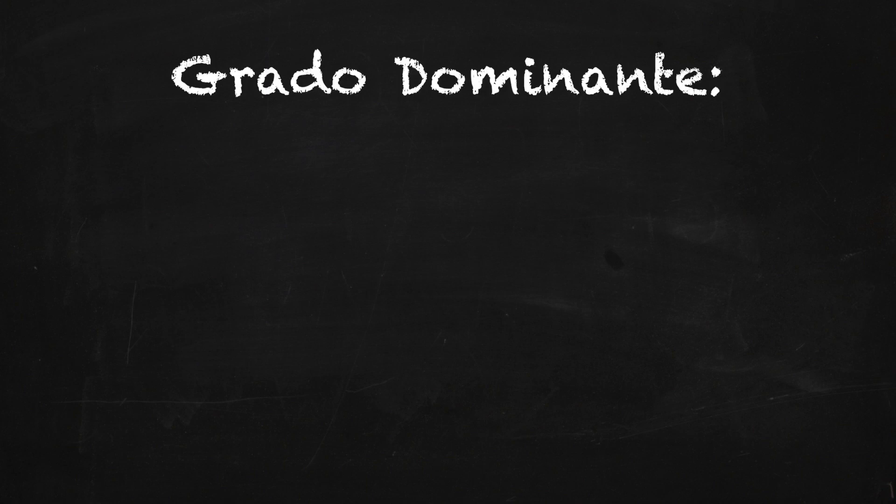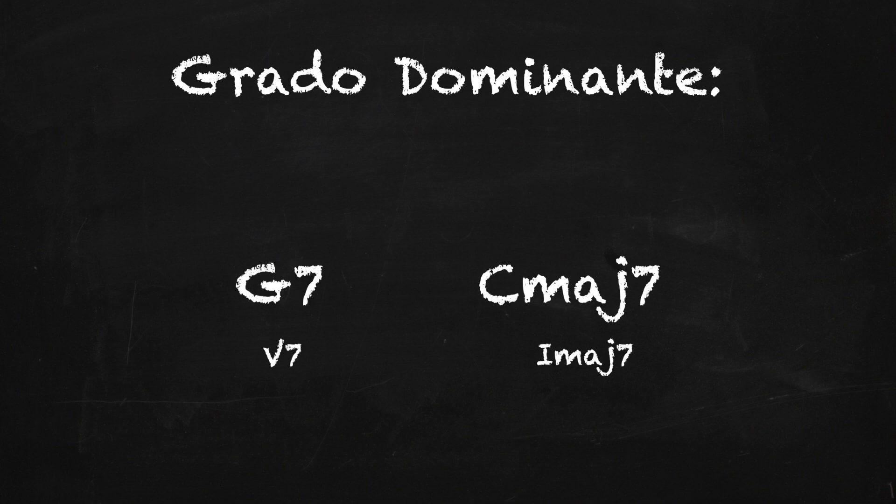Antes de empezar a explicarte sobre estos dominantes secundarios, te voy a explicar primero cuáles son los grados de dominante. Si te das cuenta en este ejemplo de un Sol 7, que es el quinto grado 7, vamos a saltar a un Do maj7 que es un primer grado. En este caso el Sol 7 ejerce una tensión que va a resolver al Do maj7.